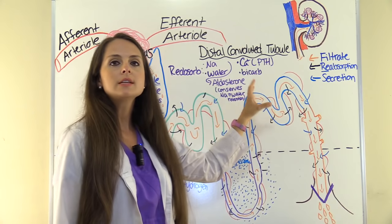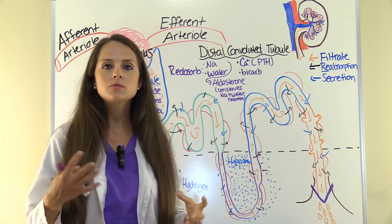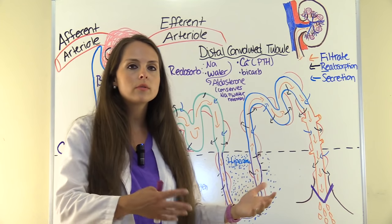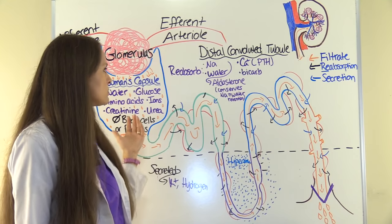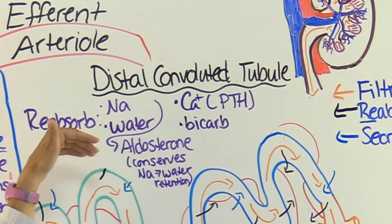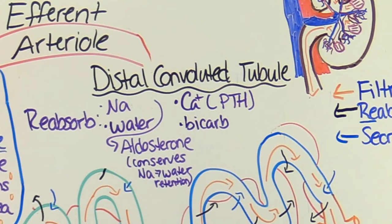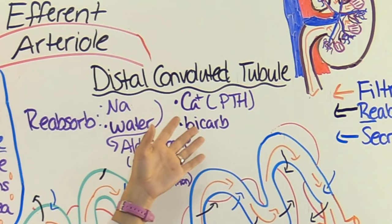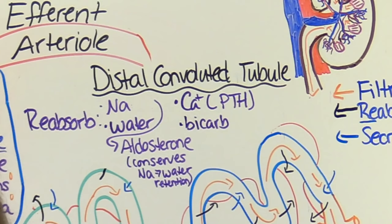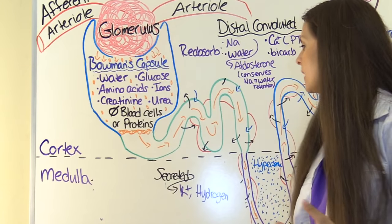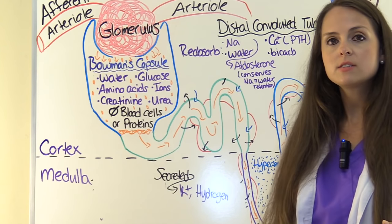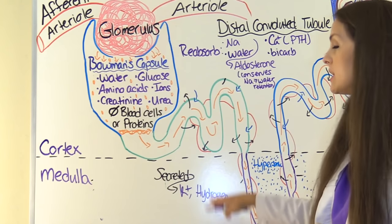The filtrate then goes through the distal convoluted tubule, where there is further tweaking — a little more reabsorption and secretion. Sodium and water are reabsorbed under the influence of aldosterone, which conserves sodium and causes water retention. Calcium is reabsorbed under the influence of parathyroid hormone, and a little bit of bicarb is reabsorbed to maintain blood pH. Potassium and hydrogen ions are secreted by the distal convoluted tubule.